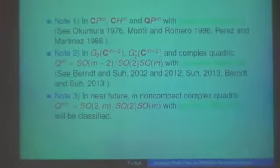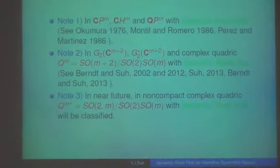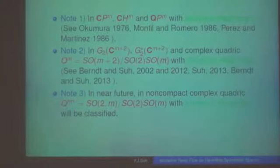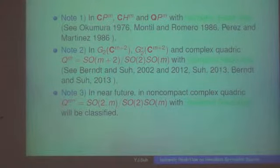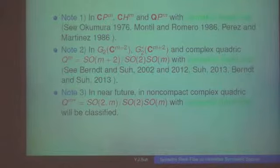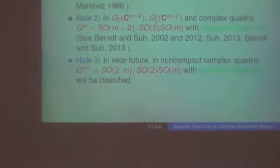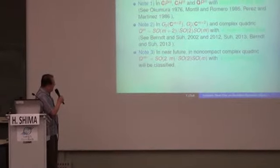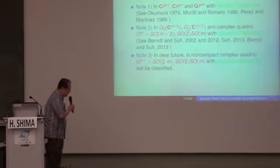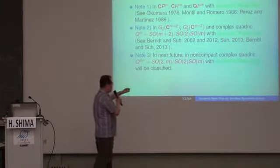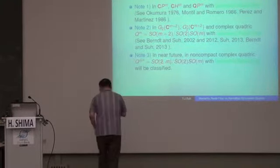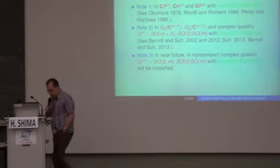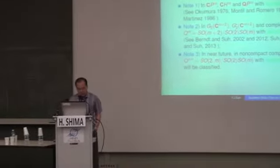In complex two-plane Grassmannian — the first compact rank-two case — we have proved and classified the hypersurfaces. And we want to classify hypersurfaces in the dual complex quadric as well. For example, in complex two-plane Grassmannian, the non-compact version — complex two-plane Grassmannian star — was recently solved, and we want to consider hypersurfaces in dual complex quadric.